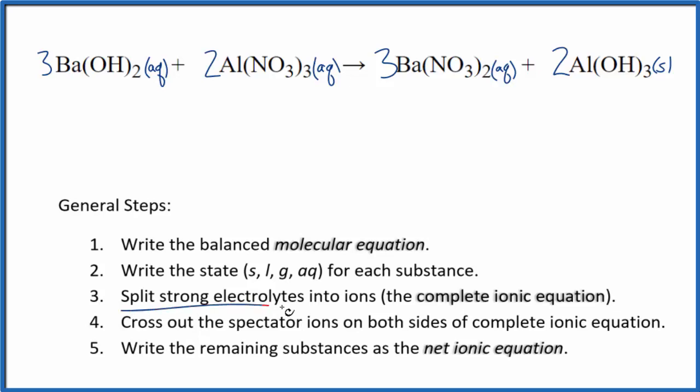Now we can split the strong electrolytes apart into ions for the complete ionic equation. Barium, group two on the periodic table, that'll be 2+. And the whole hydroxide is 1-. So we have three barium ions. And then we have three times two, so six hydroxide ions.